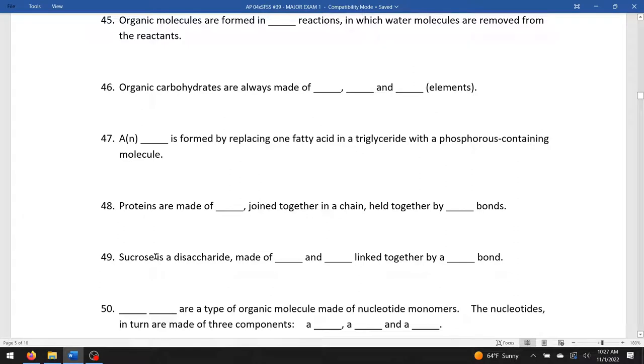Nucleic acids are a type of organic molecule made of nucleotide monomers. The nucleotides in turn are made of three components: a phosphate group, a pentose sugar, and some sort of base containing nitrogen.